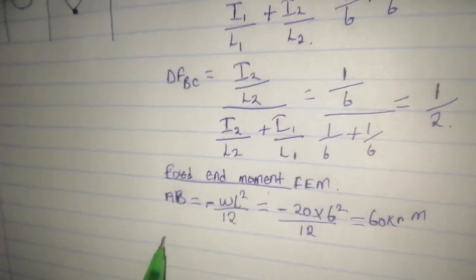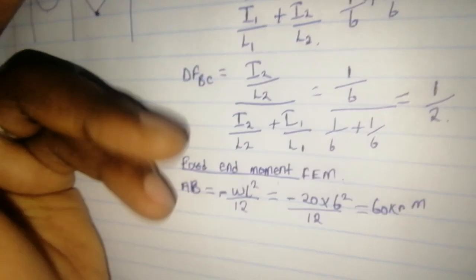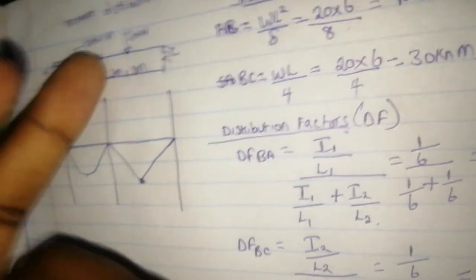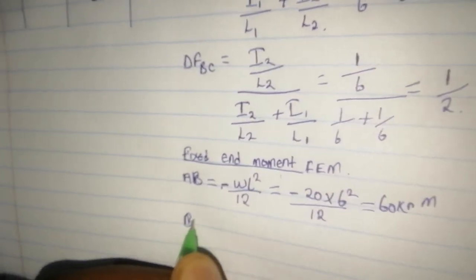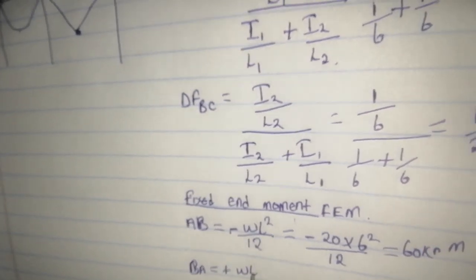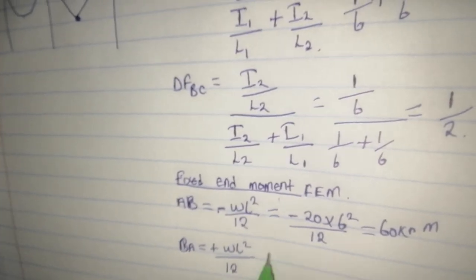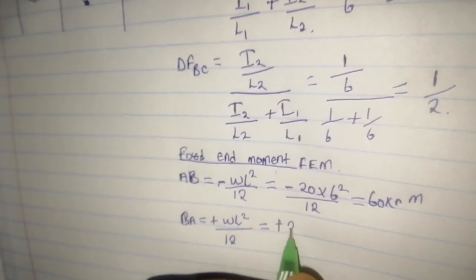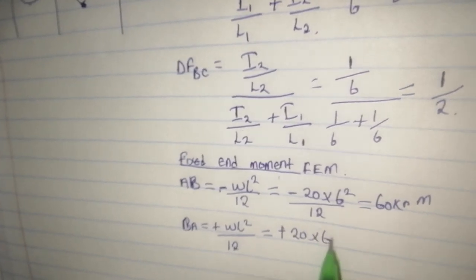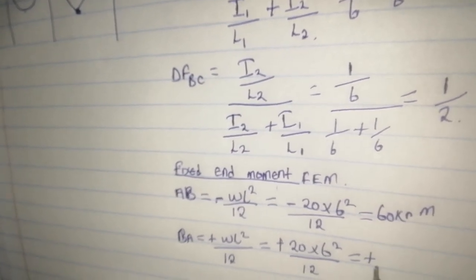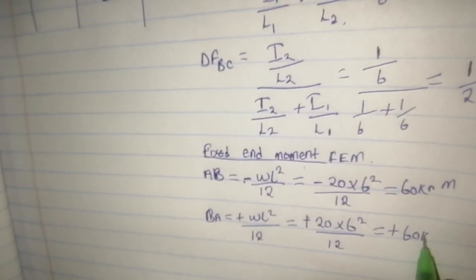We go to FEM_BA, which is from B to A, so this one is positive but the formula is the same: WL²/12. So it is positive 20 times 6² divided by 12, which is positive 60 kN·m. It is only the signs that have changed.